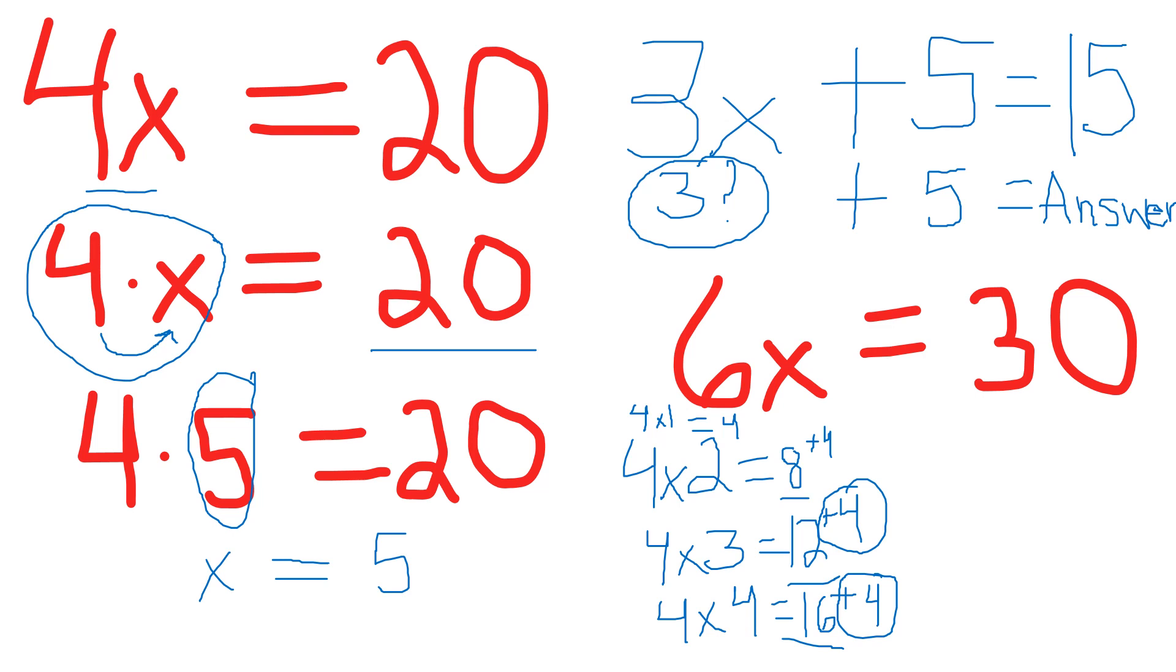So for instance, 6 times some number equals 30. Well, in your 6 times tables, 6 times 2, and I'm drawing the dot because you can either do a cross and x like this or you can do a dot. So 6 times 2 equals 12. Now the next number has to be 6 more than this, so 6 times 3 equals 18.